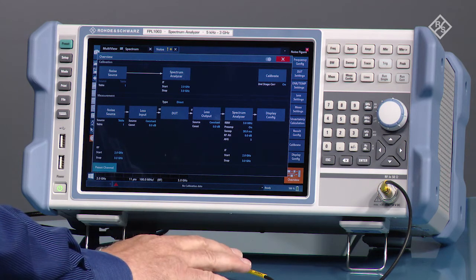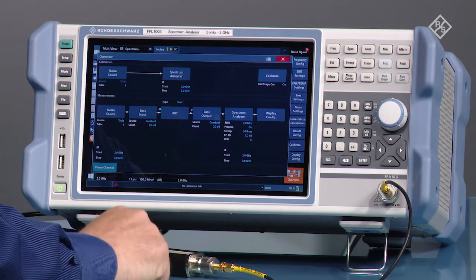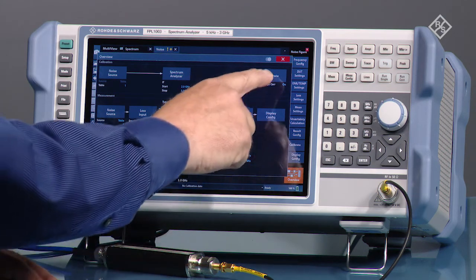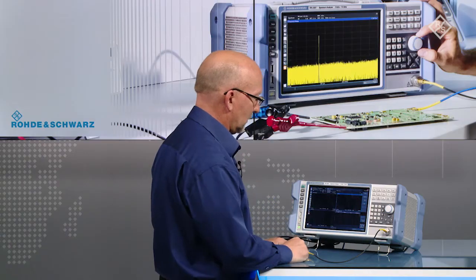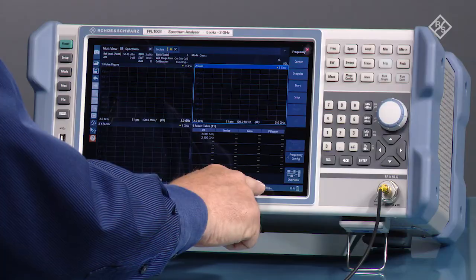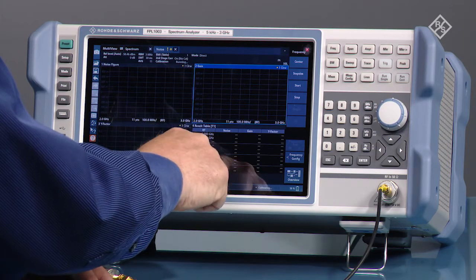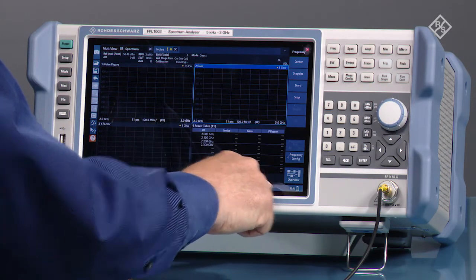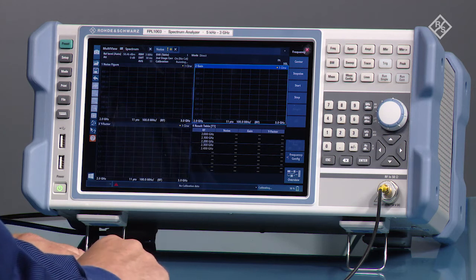We have connected a 28 volt noise source right here to the spectrum analyzer so all we're going to do now is calibrate. We can see now the calibration has started and we can see the progress right here. It will switch to ready when we are done.